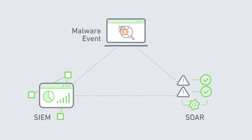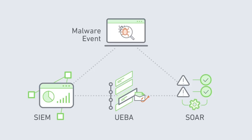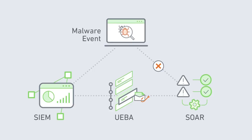And with a modern SIEM that has UEBA, the system automatically discovers that the malware came from a phishing link in an email. So now the analyst wants to block that link in other emails so no one else gets affected. This is where orchestration comes in. The SIEM works with the endpoint security system, the email security system, and maybe even something like a ticketing system.